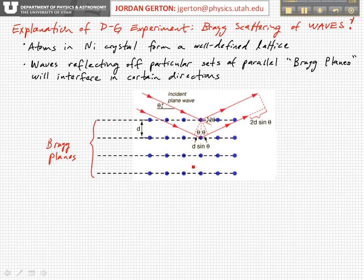The lattice can have a number of different symmetries. For simplicity, what matters is that we can explain everything by looking at it this way. The distance between atoms in the lattice, on average, we call D. If we have a wave coming in, like a plane wave, the wave fronts are coming in like this.